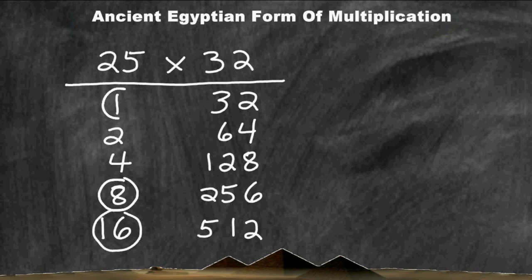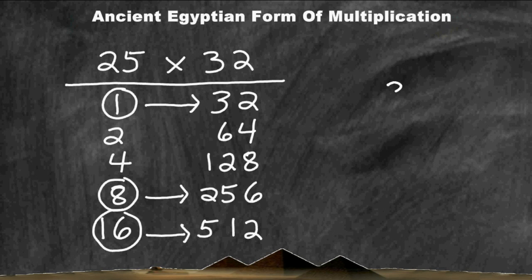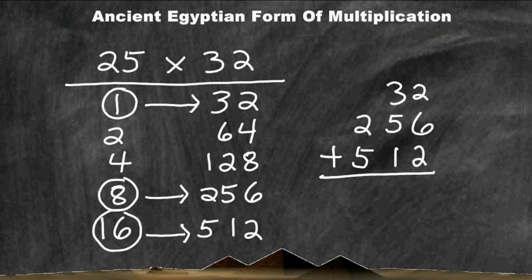After you have located the numbers that total the number at the top of your column, you must look directly to the right of the numbers that you circled. It is those numbers when added that will give you the answer. Adding 32, 256, and 512 will give us our answer, and the sum of these three values is 800. So 25 multiplied by 32 is equal to 800.